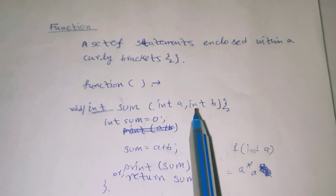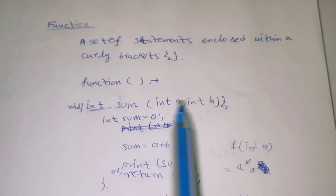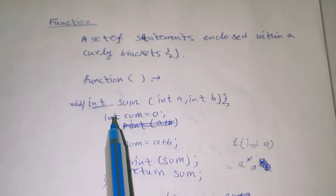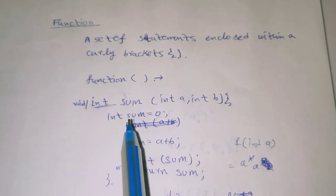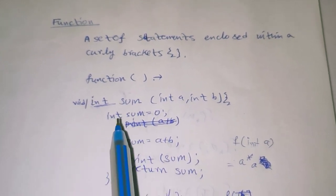This is our function name, and this is our int a and int b - these are our arguments. Here we are passing two arguments. And this is our integer variable to denote the sum.